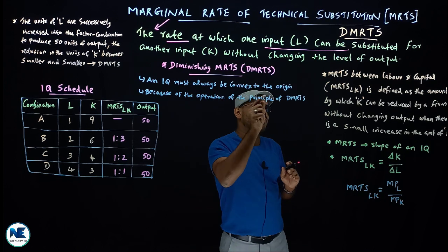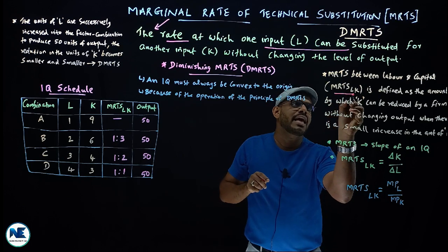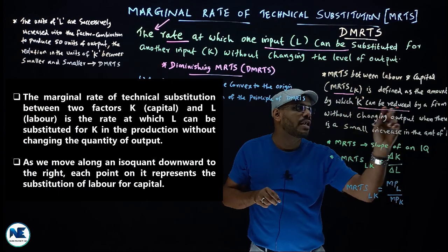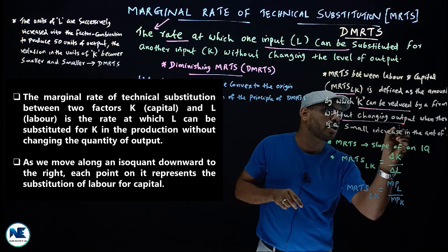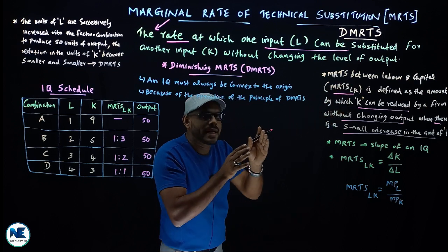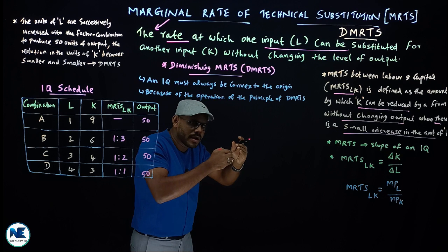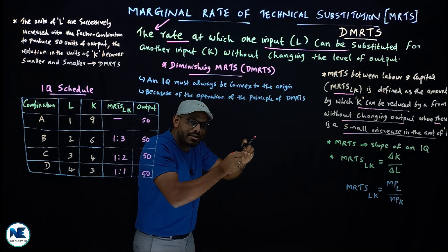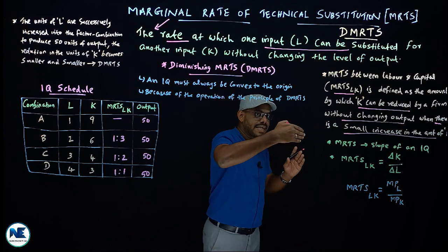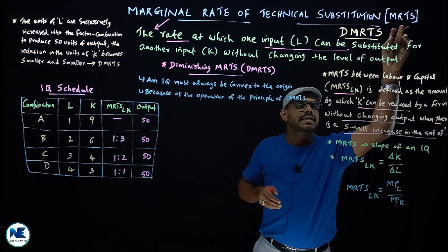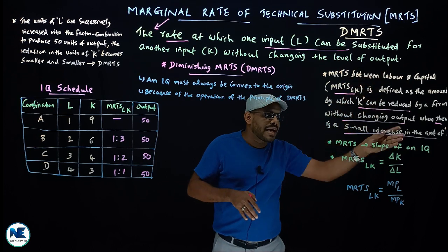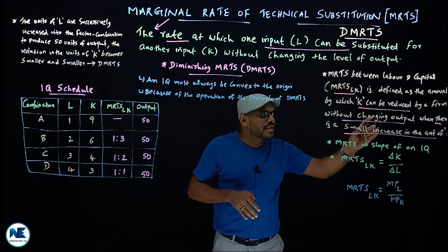MRTS between labor and capital is defined as the amount by which capital can be reduced without changing output when there is a small increase in the amount of labor. MRTS represents the amount of labor increasing while the firm sacrifices some capital, maintaining the same output level.